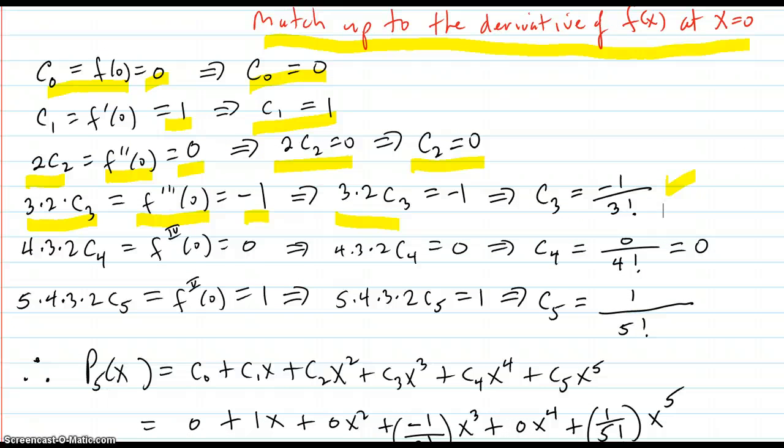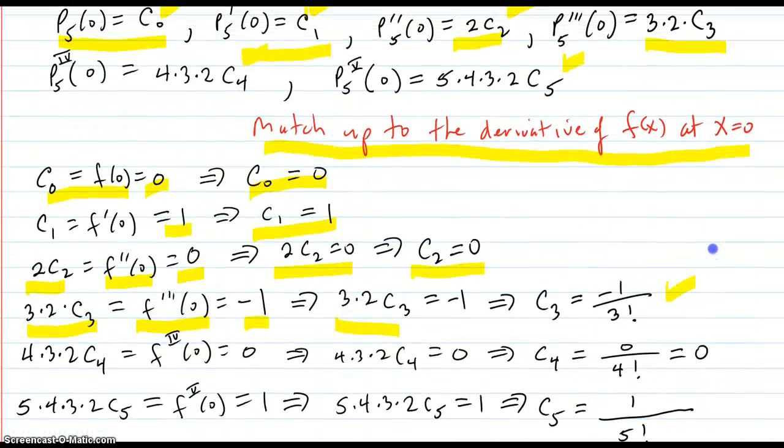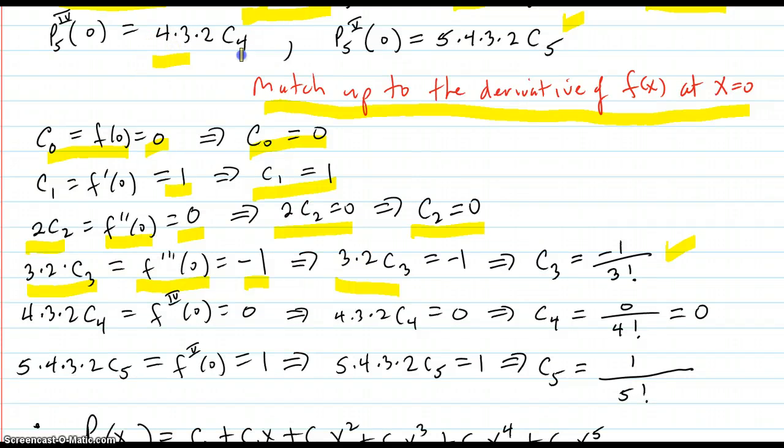Then similarly, the fourth derivative, right here, at p, that's this, has to match up with the fourth derivative at f at zero, which is this. This implies this. Dividing over implies this, which is zero, but I kept the pattern there.